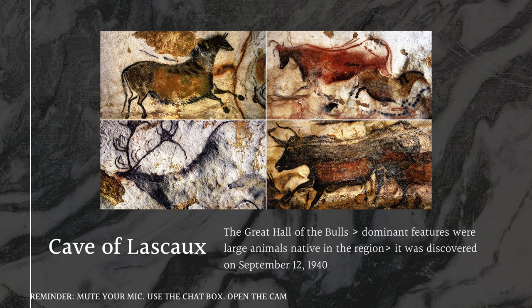Usually the materials used in this type of cave painting are coal or ashes, and blood from animals — that is why there are reds in the paintings.